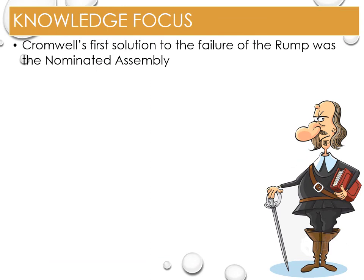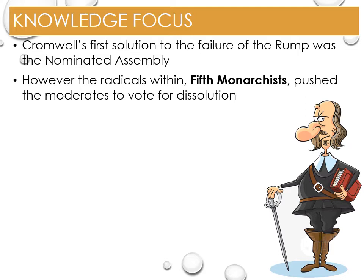The Nominated Assembly has many nicknames: Barebone's, after one of its radical members Praise-God Nicholas Barbon, or the Parliament of Saints. Nevertheless, in its short life it continued the war with the Dutch to secure trade routes, introduced measures to help debtors and the treatment of lunatics, and civil marriage could be performed by justices of the peace. However, the radical elements within the assembly, such as the Fifth Monarchists and radical religious groups, pushed the moderate members to request its dissolution by Cromwell in December 1653.